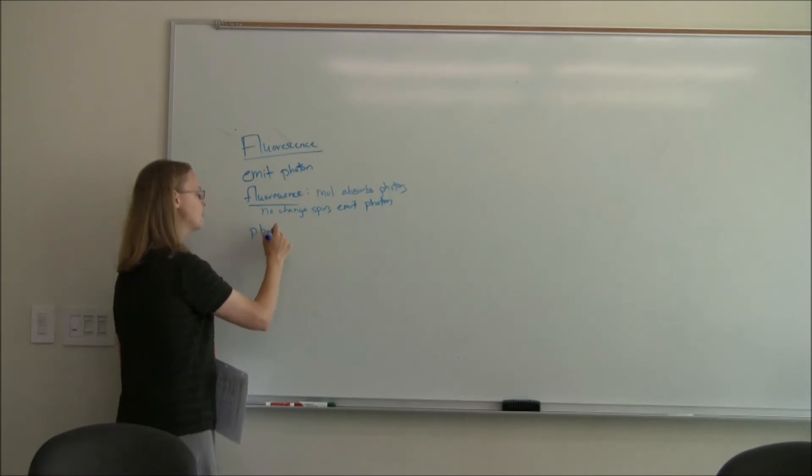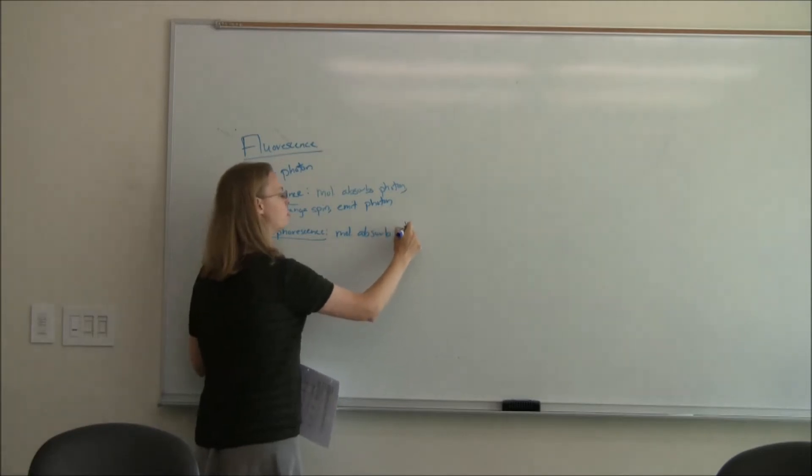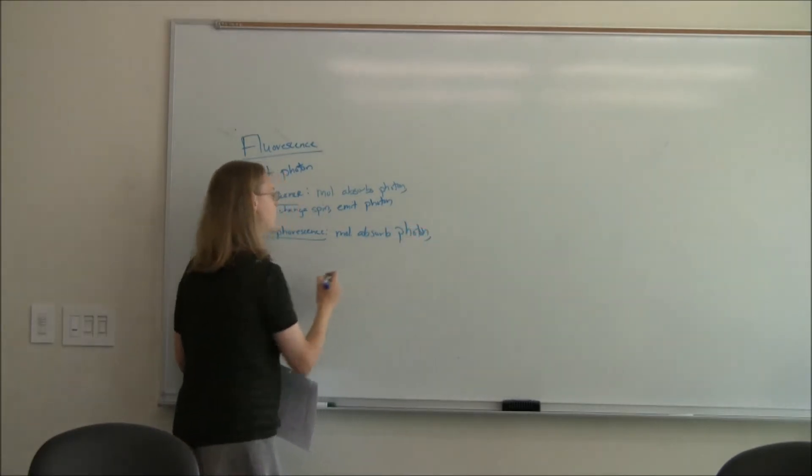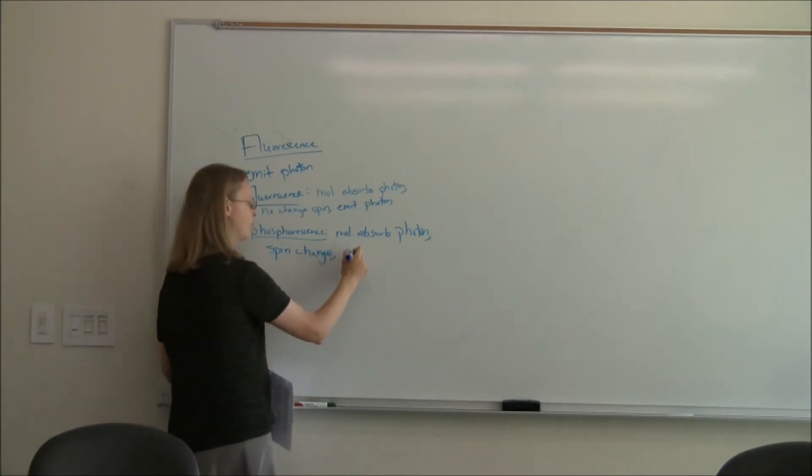In contrast to fluorescence, there's phosphorescence. And in phosphorescence, we still have our molecule which is going to absorb a photon, but now it's going to undergo a spin change. So it's going to be able to change its spin, and then it's going to emit a photon.